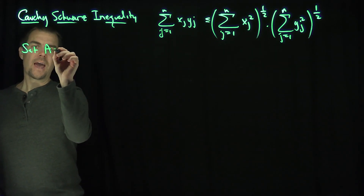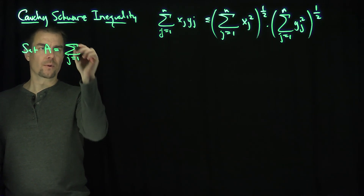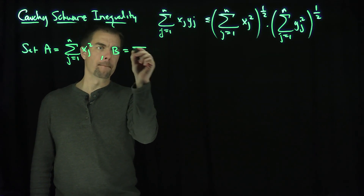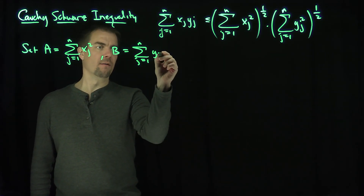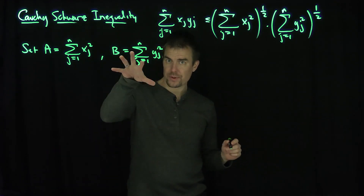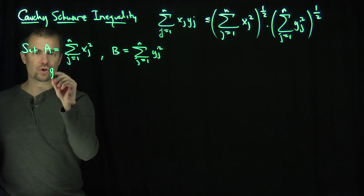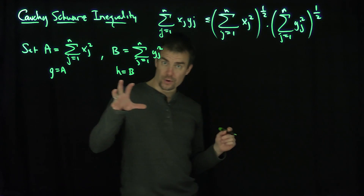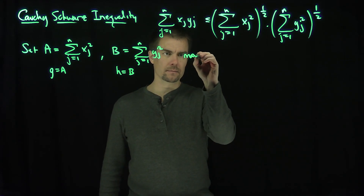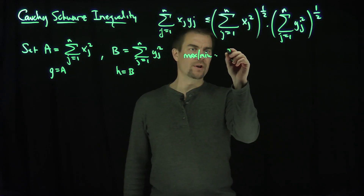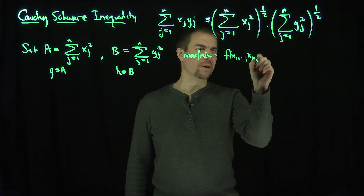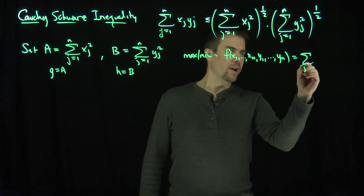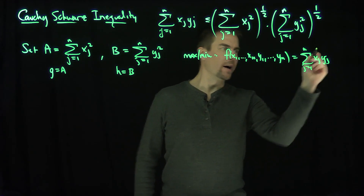I'm going to set a to be the sum j goes from 1 to n of xj squared, and I'm going to set b to be the sum j goes from 1 to n of yj squared. My goal is, with these two constraints — this constraint has the form g equals a, and this constraint has the form h equals b — to find the max/min of the function f of x1 through xn, y1 through yn, which is exactly the sum j goes from 1 to n of xj yj. That's my objective.